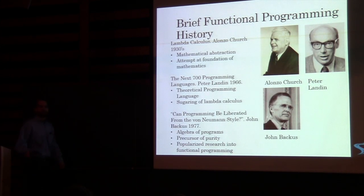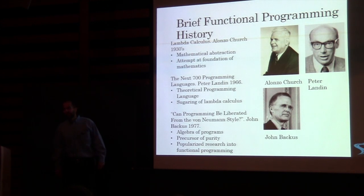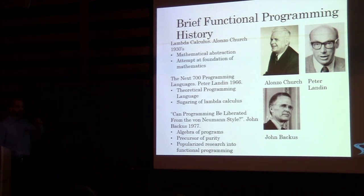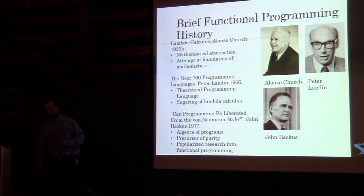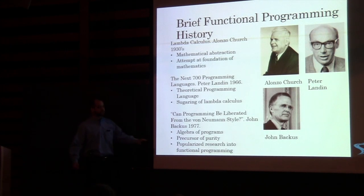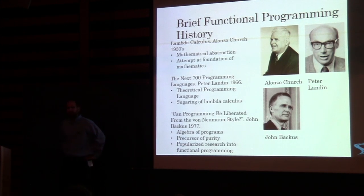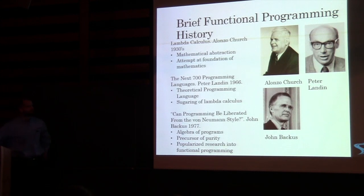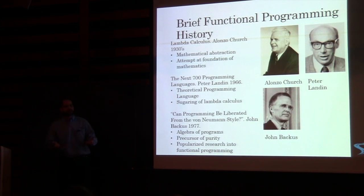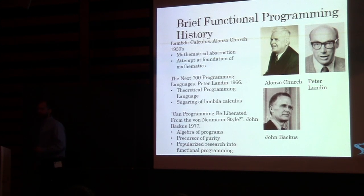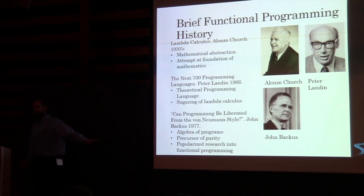Next we have John Backus. Does anybody know what John Backus is really well known for? Fortran was one of them — that was a big deal. He's giving his Turing Award lecture, and some people say this was his apology for creating Fortran. He came up with this idea of an algebra of programs — his own programming language, very strongly math-based. It's based on composition of functions. His big contribution in terms of functional programming is that he popularized this research — he made it a thing. Beyond that we have ML and Haskell and all this kind of stuff. That's just a brief history, and we can see it's very soundly based in mathematics.